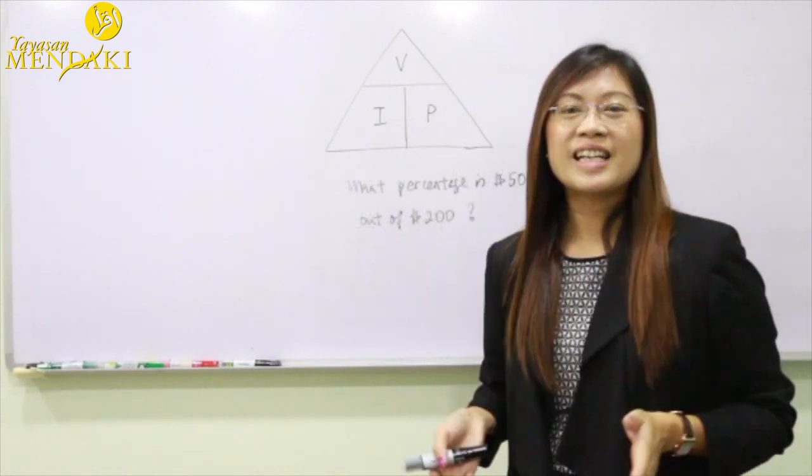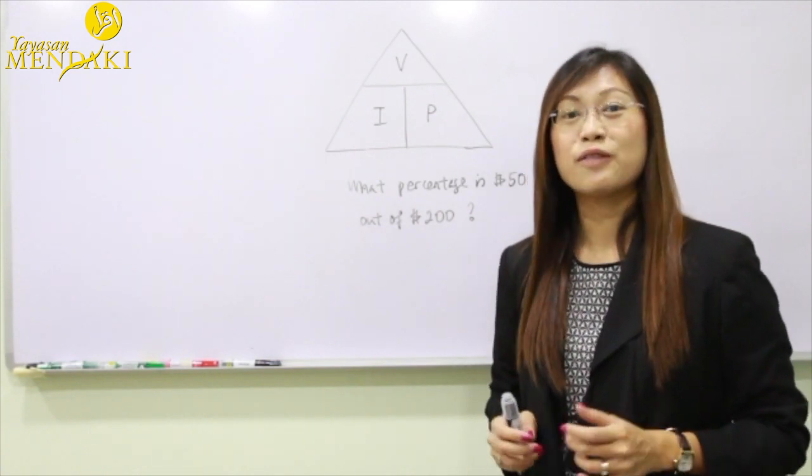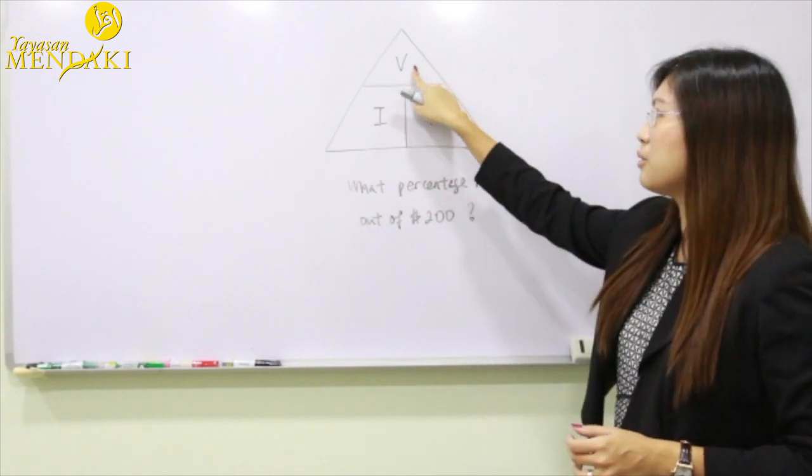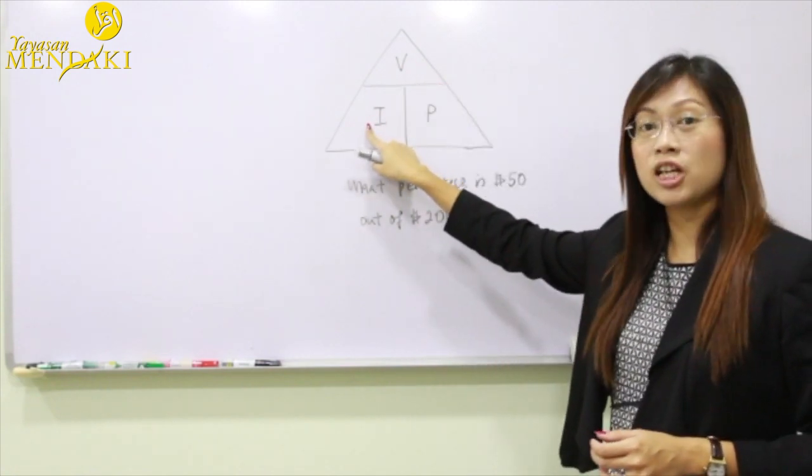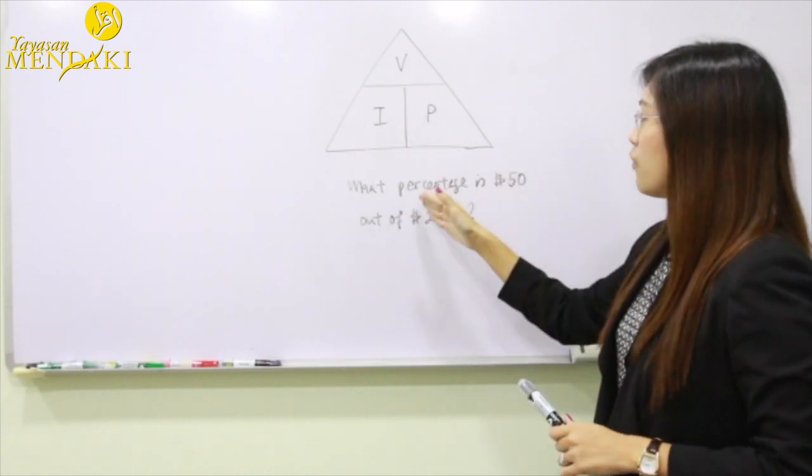Now let's take a look at another example to see how we should calculate the percentage using the VIP formula. To find the percentage, you're going to use the value and divide by the initial and multiply by 100%.